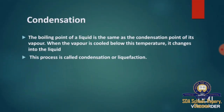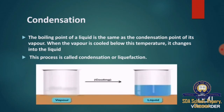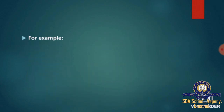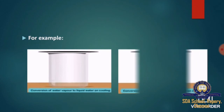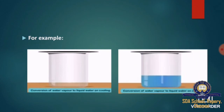Next, we move on to condensation. Conversion of vapor into liquid on cooling is called condensation. As shown in this image, when we take vapor, it can be converted into liquid through the process of cooling. This is known as condensation. For example, conversion of water vapor to liquid water on cooling.